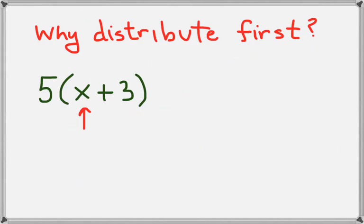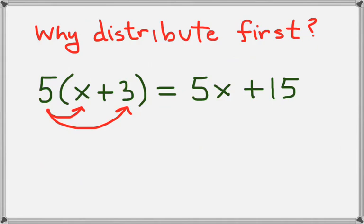But we can still distribute to get rid of those parentheses. So what we'll do is we'll take 5 times x, that gives us 5x, and then we'll take 5 times 3, which gives us 15.